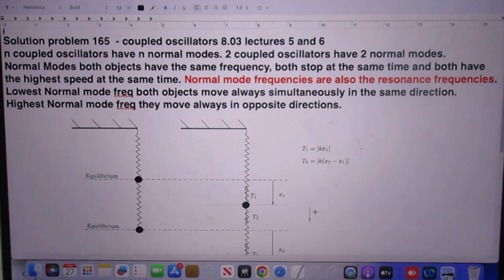What are normal modes? In normal modes all objects have the same frequency. They all stop at the same time and they all have the highest speed at the same time.